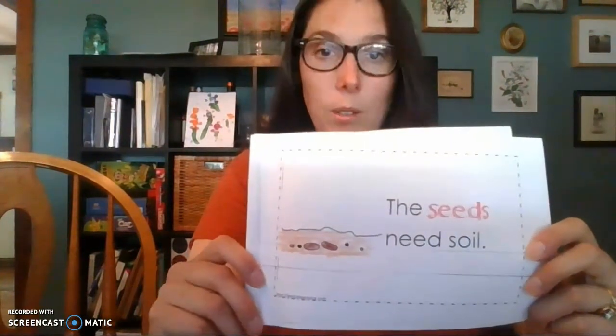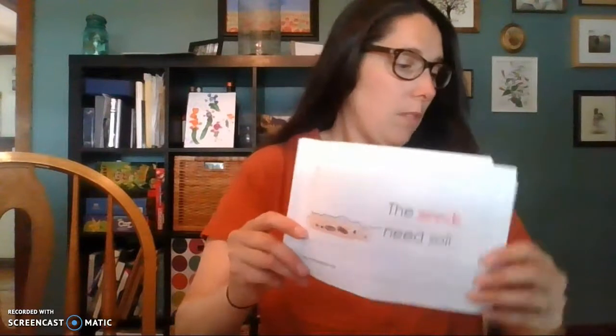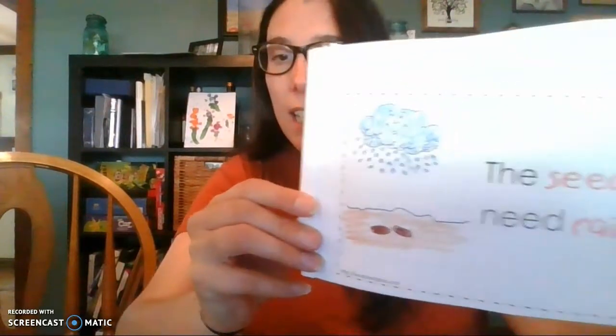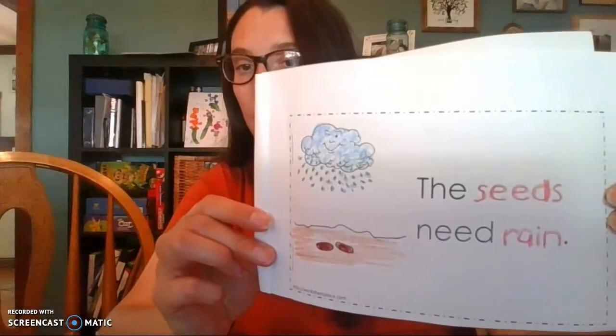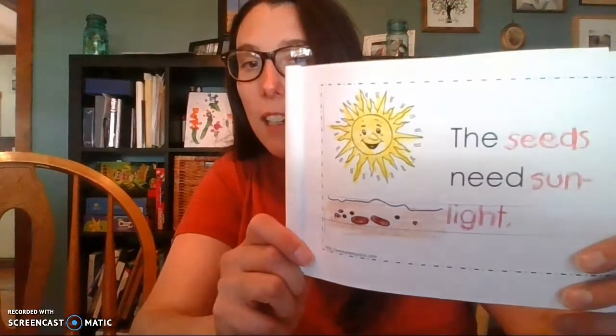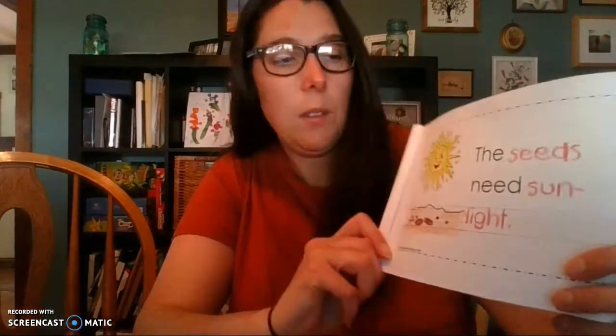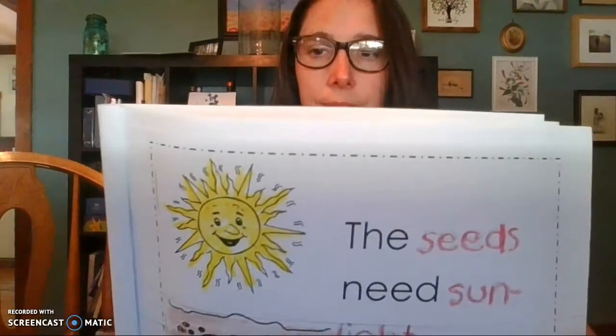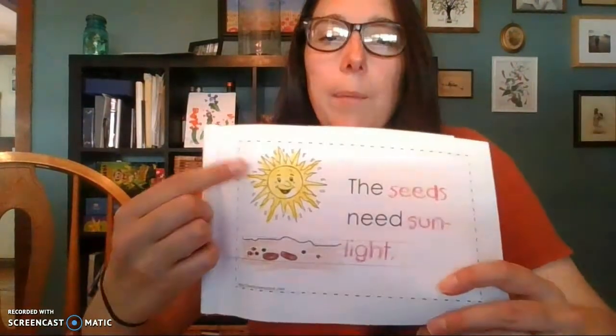The seeds need soil - or we also called it dirt. The seeds need rain or water. The seeds need sunlight. Where's the sun? The seeds need sun to grow.